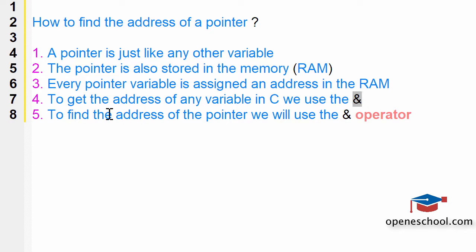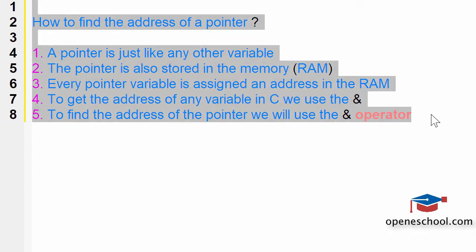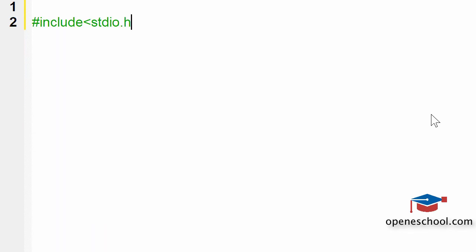Therefore, to find the address of a pointer, we will use the ampersand operator. Now, you need to give a programming example. Let's see how we can use the ampersand operator to get the address of the pointer variable.